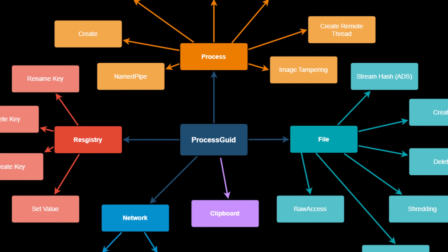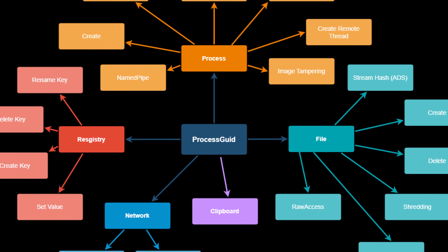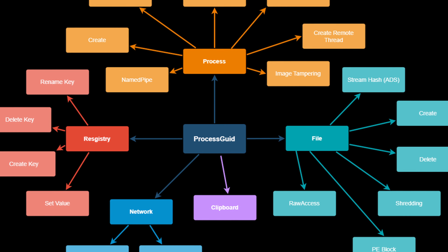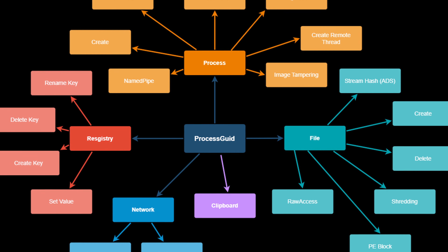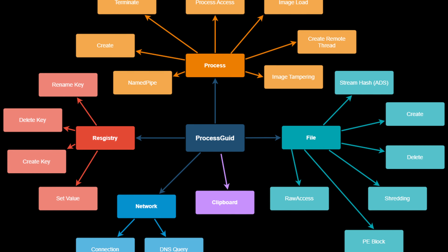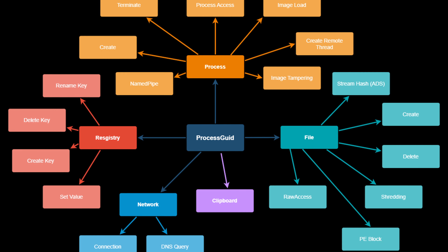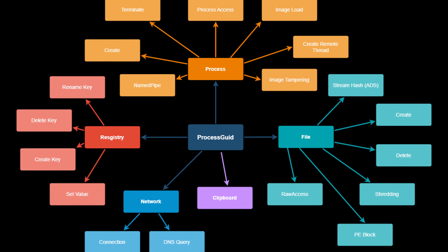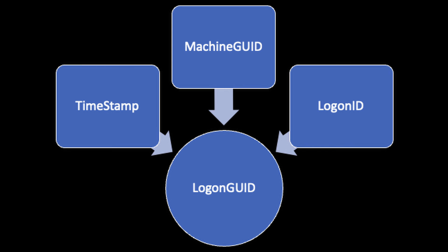This GUID is super useful to us because it is used across multiple data sources inside Sysmon — not only for processes, but also for file actions, the clipboard, network, registry actions, named pipes, file creation and termination, image loads, process access, file deletion, and clipboard data. We also have the logon GUID, which is also unique per machine, combining the timestamp, machine GUID, and logon ID to create a unique GUID value we can use to track all of the different actions for a specific user when working with this series of events.